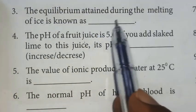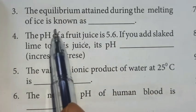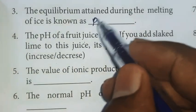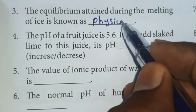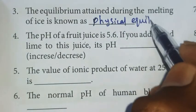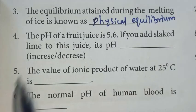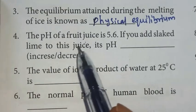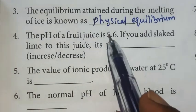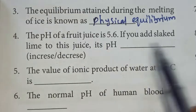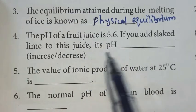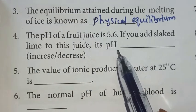Third one: The equilibrium attained during the melting of ice is known as physical equilibrium. Fourth: The pH of fruit juice is 5.6. If you add slaked lime to this juice, its pH increases.